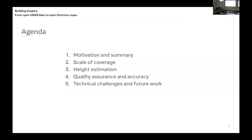Building heights — why are we talking about them? What are they good for? Where are we talking about, how many building heights, where are they in the world? How do we do it — inputs, outputs, process? How are we confident in the results? What issues did we find and how are we improving? And finally, now that they're published, how can we bring them into OpenStreetMap?